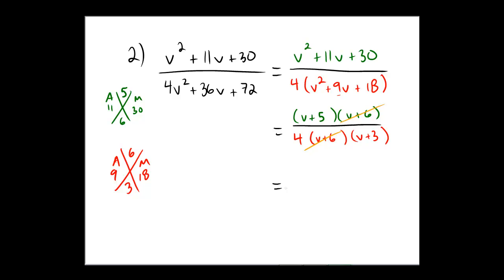So what's left over at the end here? Looks like a v plus 5 alone on the top. And in the bottom, it's a 4 multiplied by a quantity of v plus 3. I hope you got the same answer I did.